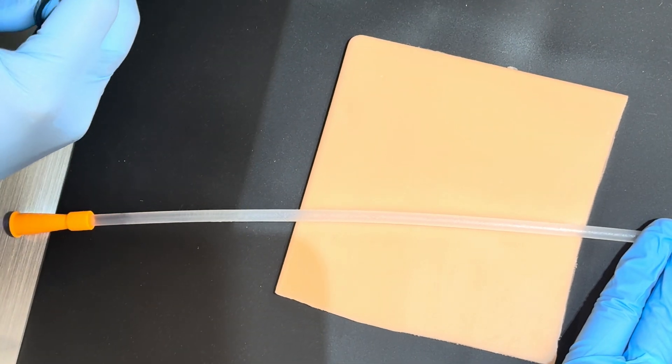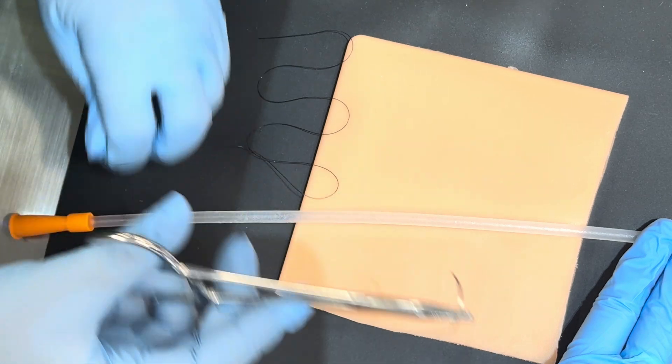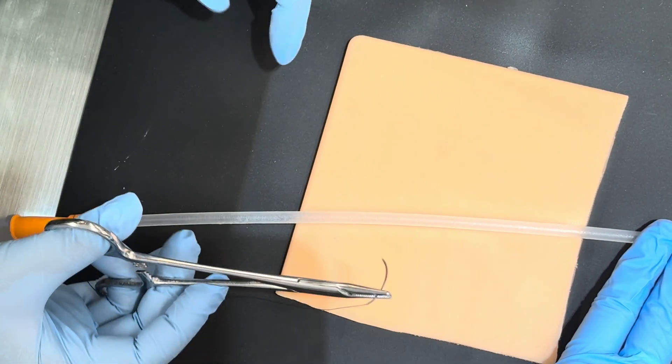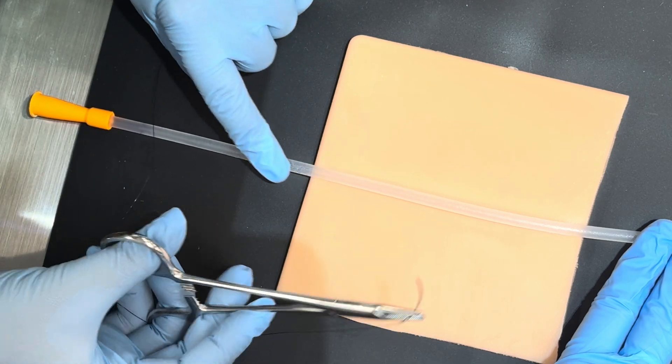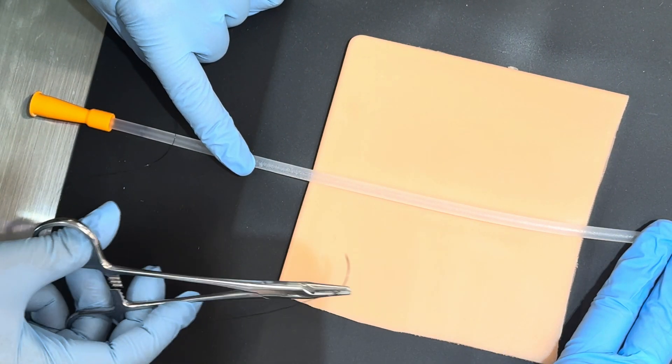We're going to demonstrate a finger trap suture as we would do for a urinary catheter. There is no incision present. This catheter is going inside of the patient that way.